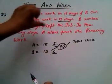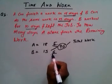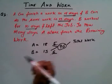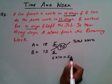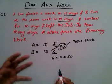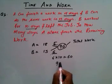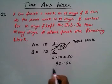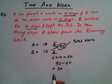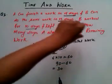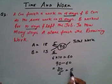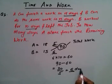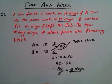B worked for 10 days and left the job. B's one day work is 6, so total work done by B is 6 multiplied by 10, which is 60. So 60 units of work are done by B. The remaining work is 90 minus 60, which is 30. This remaining work will be done by A. A's one day work is 5, so A will finish the remaining 30 units in 30 divided by 5, which is 6 days.